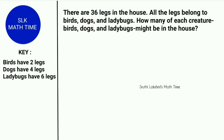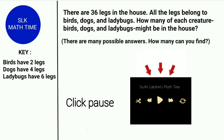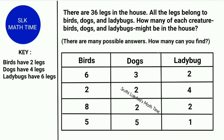Let's see another example. There are 36 legs in the house. All of the legs belong to birds, dogs, and ladybugs. How many of each creature might be in the house? There are many possible answers for this question, so see how many you can find. Take your time and pause this video. I have written a graph with the answers — these are not the only answers, there are many more.